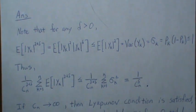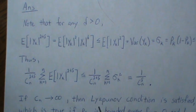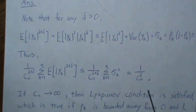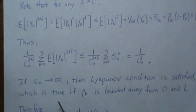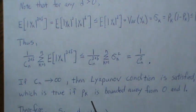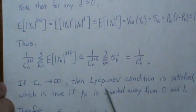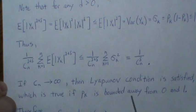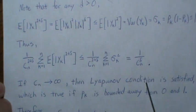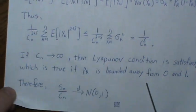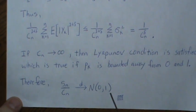Now if cn goes to infinity then the Lyapunov condition is satisfied, and this is true if pk is bounded away from zero or one. Then cn does go to infinity. So if we can keep pk away from zero or one, then the Lyapunov condition is met, and therefore Sn over cn converges in distribution to a standard normal distribution.